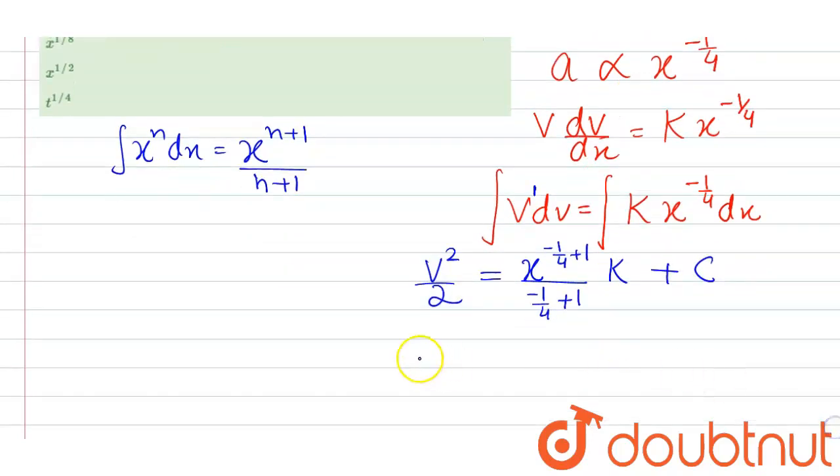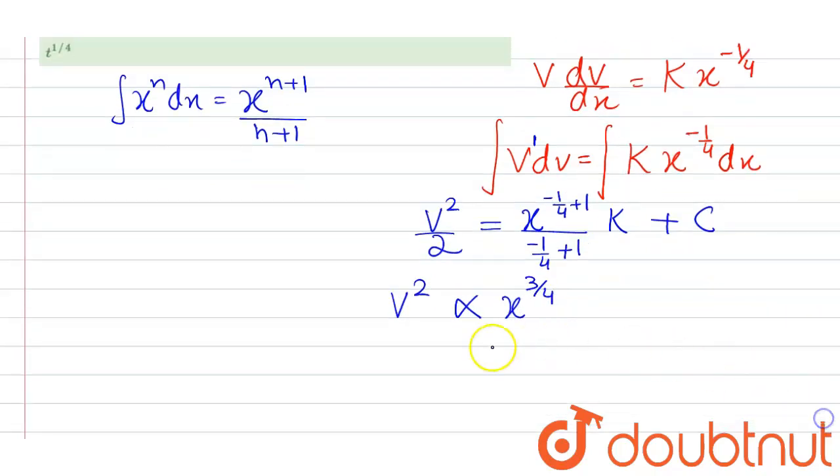So that comes out to be V square is directly proportional to x to the power 3 by 4. Or you can say V is directly proportional to x to the power 3 by 8 by taking square root.